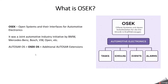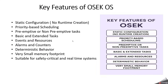Autosar Operating System is equal to OSEK operating system along with additional Autosar extensions. The key features of OSEK operating system: it is specifically designed for static configuration — there is no runtime creation — and it is designed for small embedded ECUs and hard real-time behavior. It is based on priority-based scheduling and supports basic tasks, extended tasks, events, alarms, counters, and resources. OSEK is simple, deterministic, and predictable.